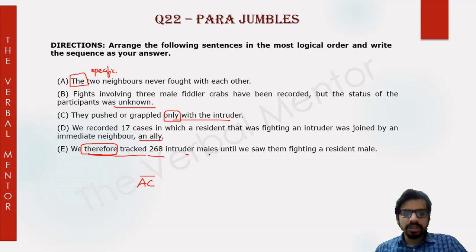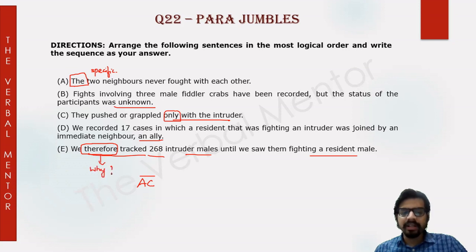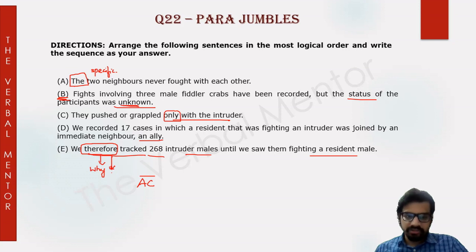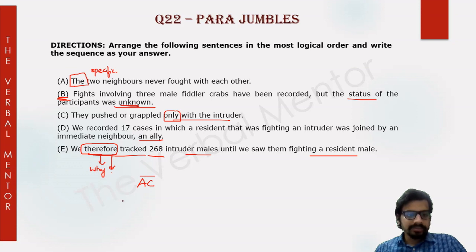We therefore tracked 268 intruder males until we saw them fighting a resident male. The previous sentence should tell us why the narrators tracked 268 intruder males. The reason is in sentence B — the fights involving three crabs were recorded but the status of participants was unknown. Because the status was unknown, they therefore tracked 268 intruder males — the narrators conducted a research. So B and E form a concrete pair.